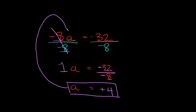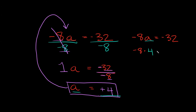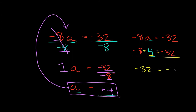The last step is checking our answer. Plugging into the original equation: negative 8a is equal to negative 32, and we got a equals positive 4. So we have negative 8 times positive 4. A negative times a positive is negative, and 8 times 4 is 32, so we get negative 32 equals negative 32. That's obviously a true statement, so our answer was also correct.